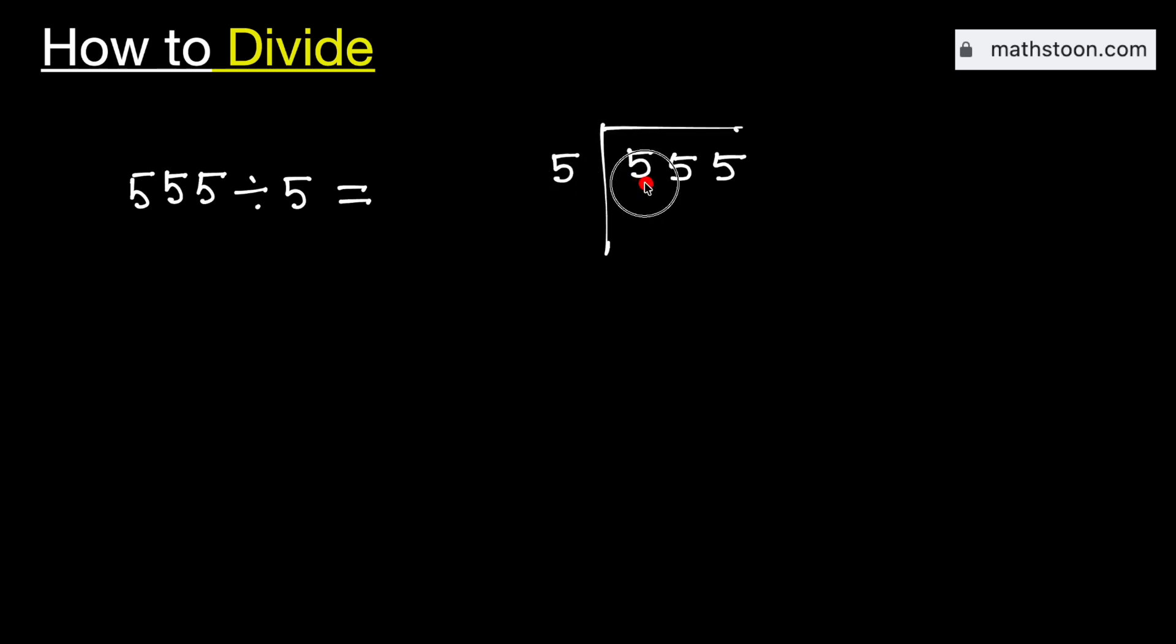Consider the first digit 5. We know that 5 times 1 is 5. Subtract, we get 0. Now this 0 is less than 5, that is why we need to bring down this number 5 here.